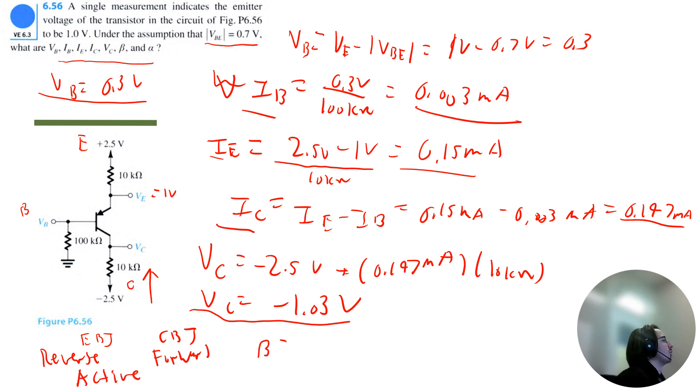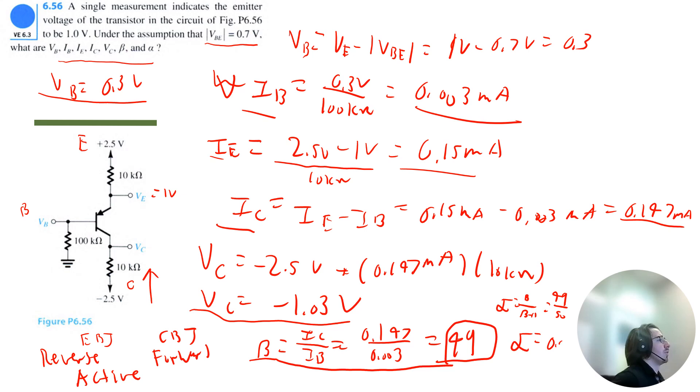So we can leverage the following equation for beta. It will be the collector current divided by the base current, which is 0.147 divided by 0.003. And that's equal to 49. And alpha will be equal to beta divided by beta plus 1. So that's 49 divided by 50. So I get that alpha is equal to 0.98.